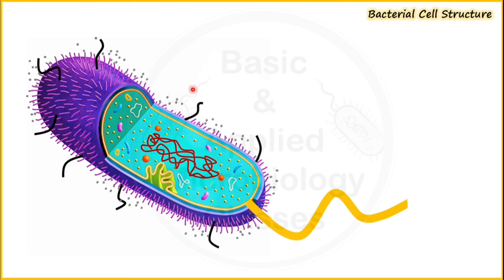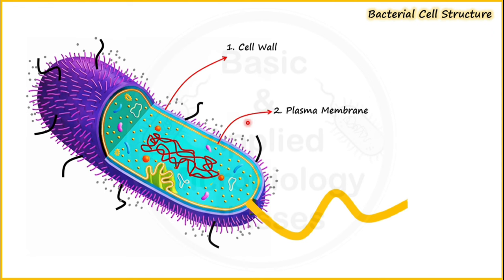Firstly, we can observe the presence of an outermost layer shown here in purple color. This outermost layer which surrounds the bacterial cell is called the cell wall. Now we can observe the presence of an innermost layer shown here in yellowish color — this layer we call the plasma membrane. In between the cell wall and plasma membrane there is a space called the periplasmic space.